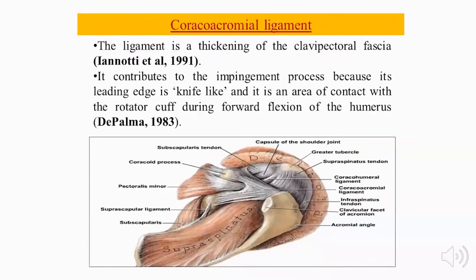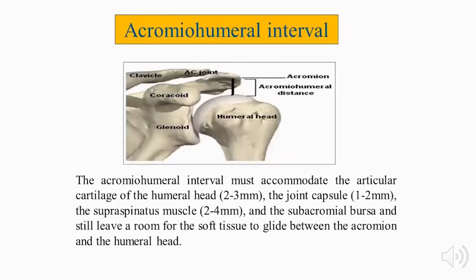The coracoacromial ligament is a condensation of the clavipectoral fascia. It acts as a knife-like mechanism impinging on the rotator cuff during forward flexion of the humeral head. We also need to know the acromiohumeral interval, which is the distance between the undersurface of the acromion and the humeral head.